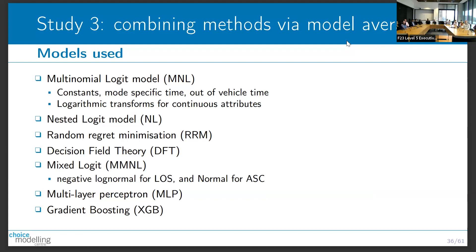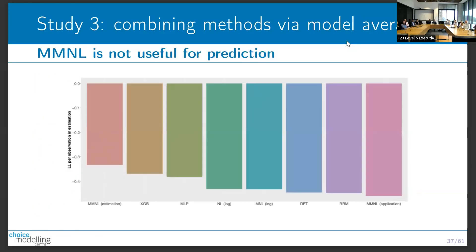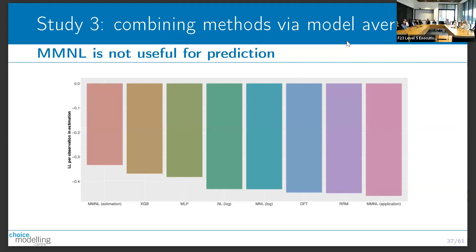We use five sets of data in estimation, always combining four segments: estimating a model on segments 2-5 for shorter trips, 3-6, up to 6-9 for longer trips. We bring this together in model averaging to understand which model to give more weight to depending on where we're predicting. The models include logit models with constant mode-specific time and vehicle time, log-transformed continuous attributes, random regret decision theory, mixed logit, and two machine learning models: multi-layer perceptron (neural network) and gradient boosting.